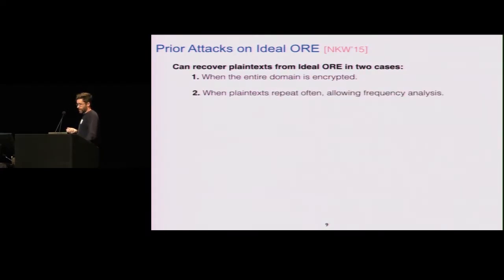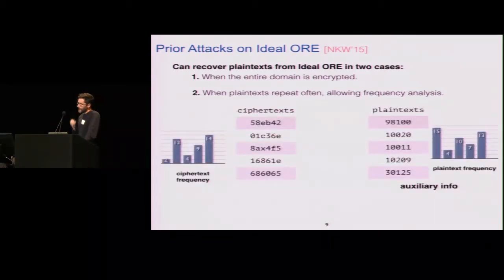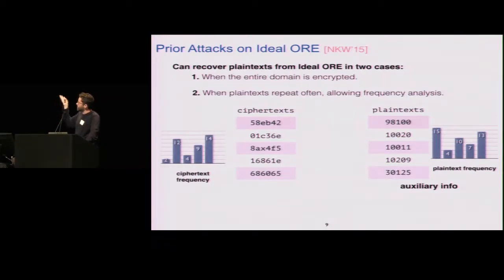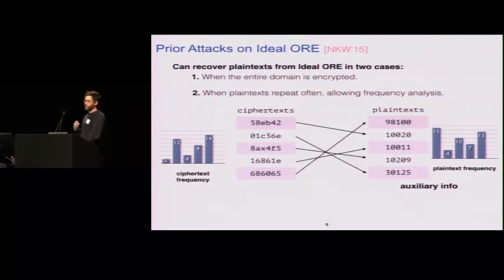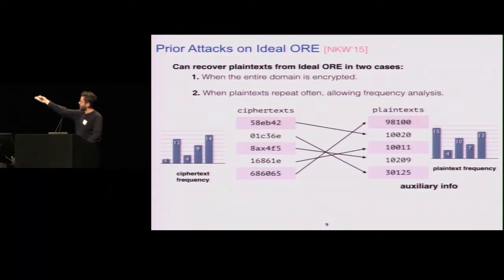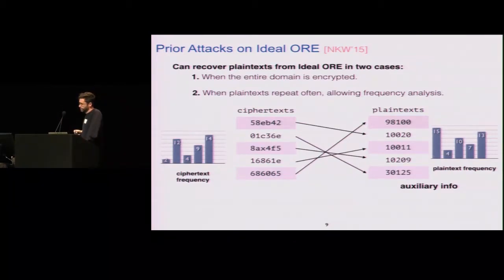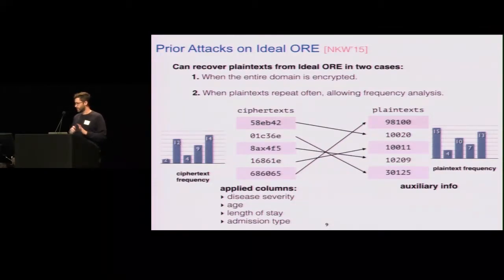The next problem they identified is that when plaintexts repeat, since this is a deterministic cipher, you can do frequency analysis — the same thing you do to break a substitution cipher. In a setting where you capture ciphertexts and have auxiliary information about the distribution of plaintexts, you set up an optimization problem to do frequency analysis and generate guesses for the plaintexts based on training data.